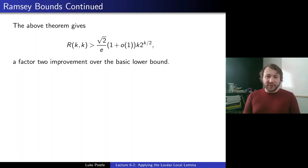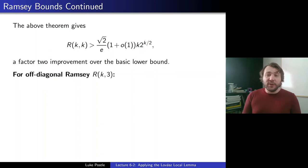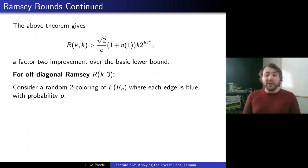This is really the best known using the Local Lemma for this random construction. But for off-diagonal Ramsey numbers, the Local Lemma approach can actually improve the numbers by orders of magnitude. So let's just do this for R(k,3) — kind of the most basic interesting one — and go through how the Local Lemma approach would work.